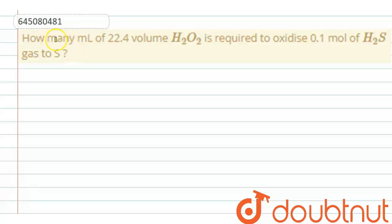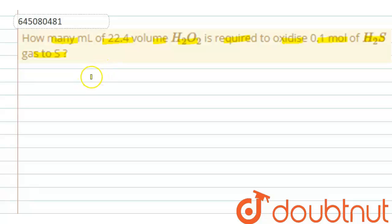Dear students, the question is: how many ml of 22.4 volume hydrogen peroxide is required to oxidize 0.1 mole of H₂S gas to sulfur? We need to find out the volume of 22.4 volume hydrogen peroxide required to oxidize 0.1 mole of H₂S gas to sulfur.